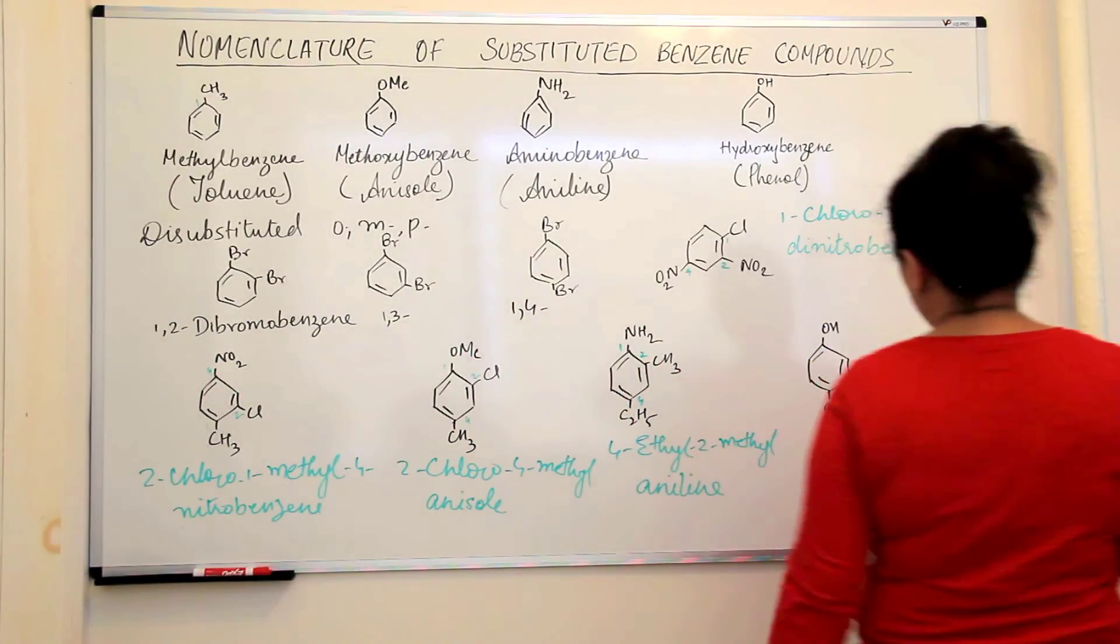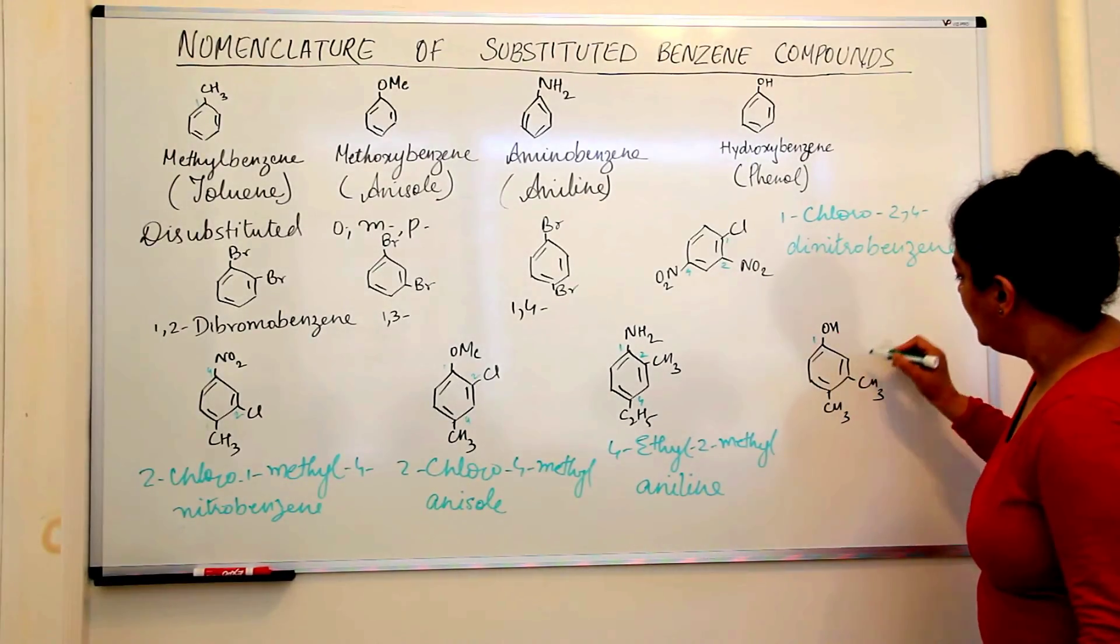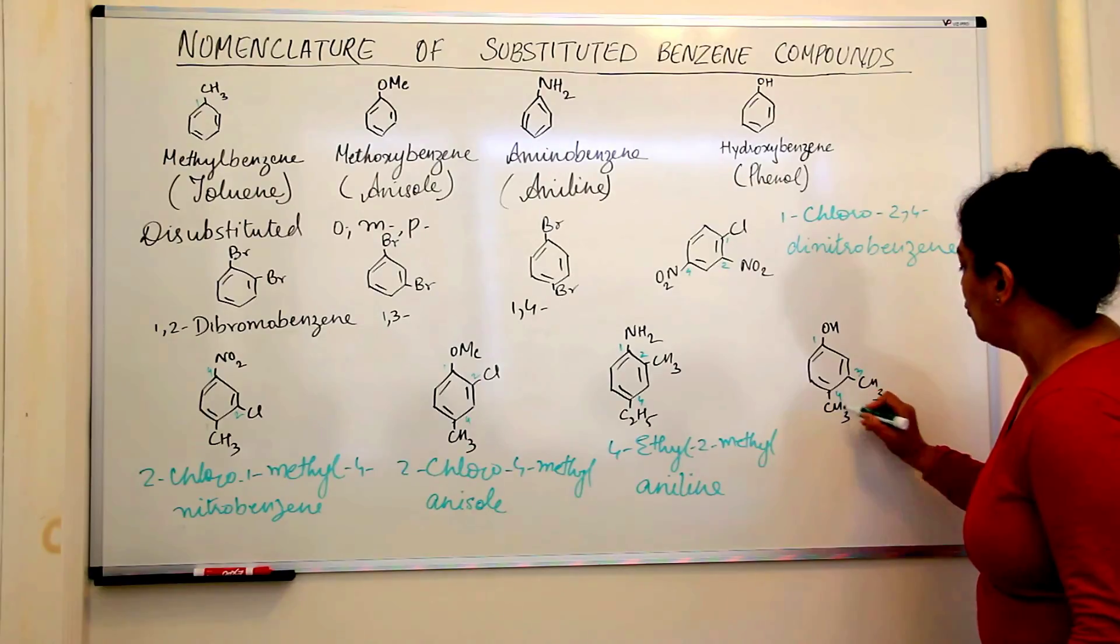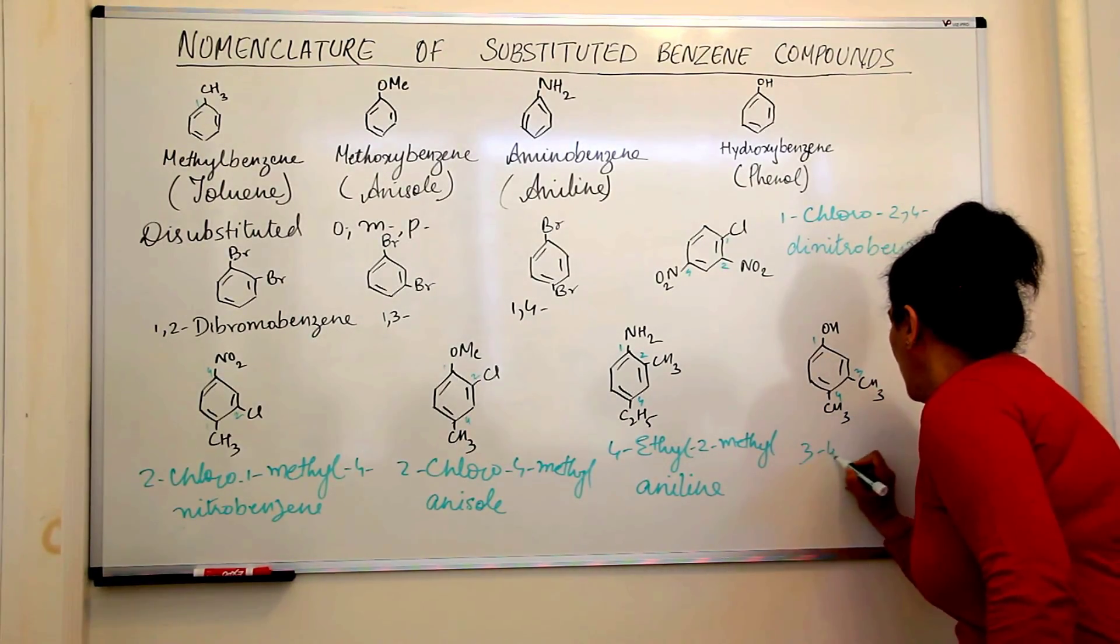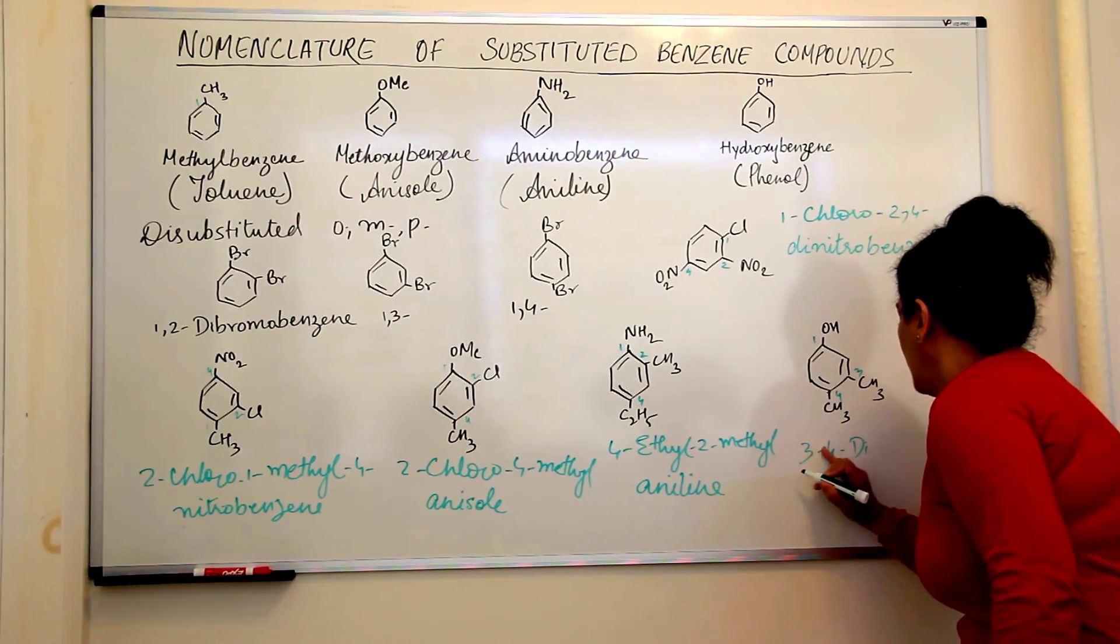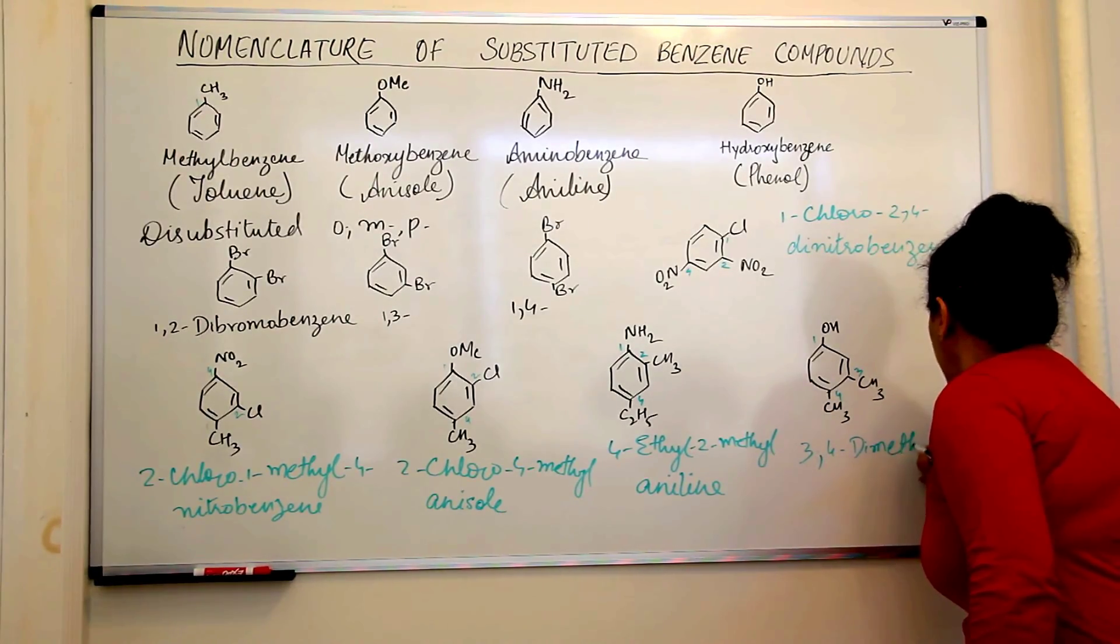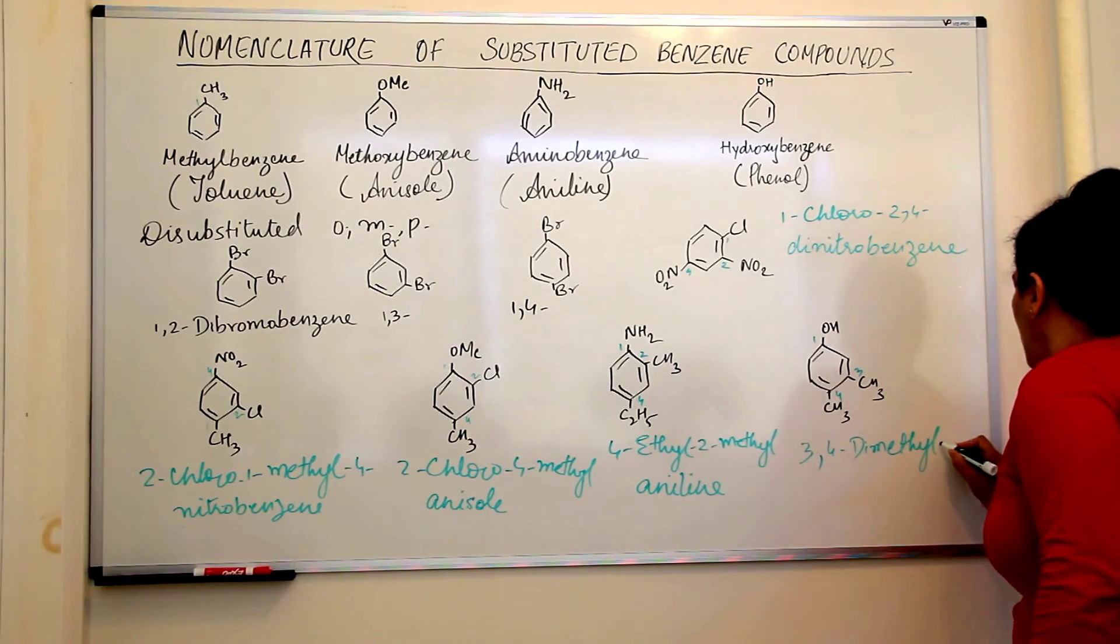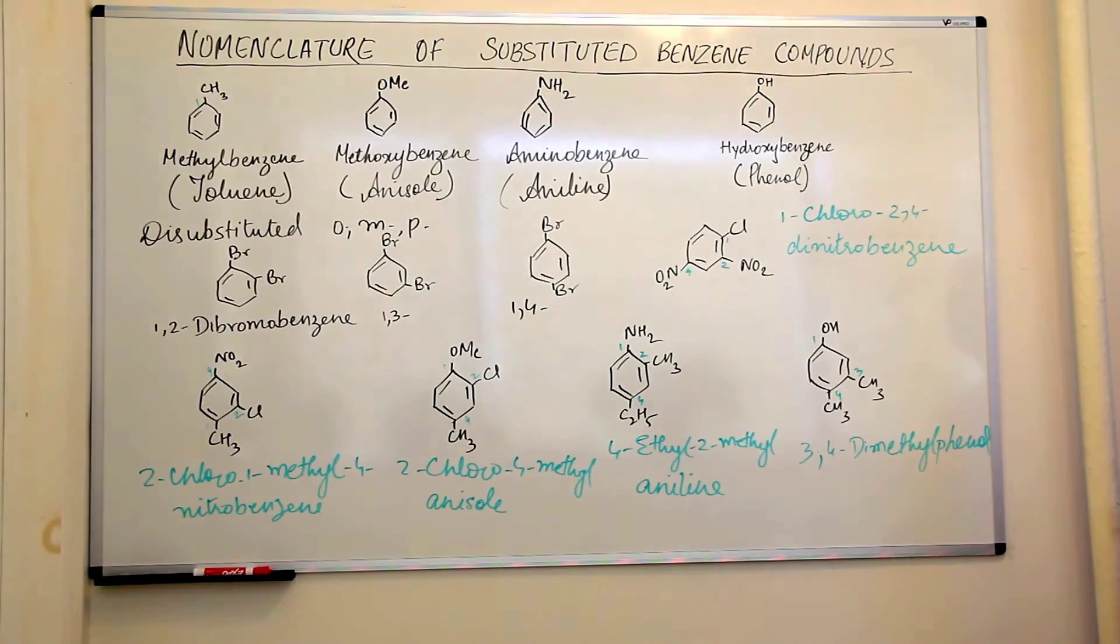So, now let us come to this last compound. It is a phenol. A phenol, this is 1, this is 3, this is 4. Both are methyls. So, this would be 3, 4-di-methylphenol. Right?